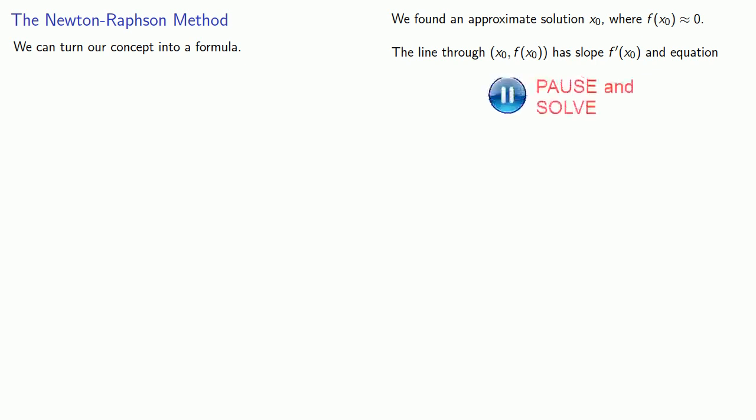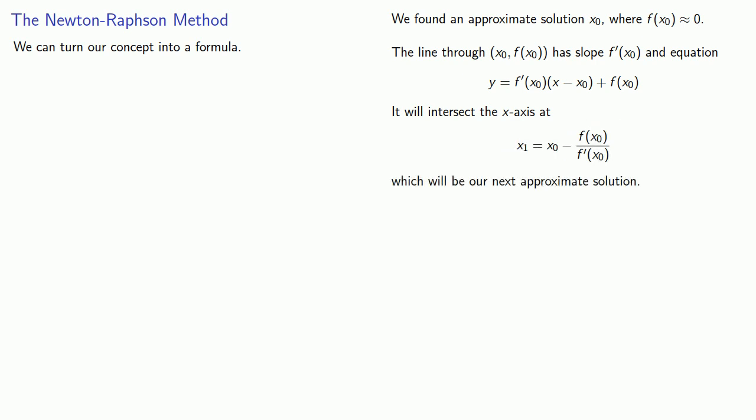We can turn this into a formula. This is known as the Newton-Raphson method. To develop this method, let's consider our steps. First, we found an approximate solution where f(x₀) was close to 0. Then, since we knew f'(x), we were able to write the equation of the line through the point (x₀, f(x₀)), which would have slope f'(x₀). Since the line approximates the graph of the function, where the line crosses the x-axis is going to be close to where the graph crosses the x-axis. So we found the x-intercept, and the important idea here is that this is going to be our next approximate solution.